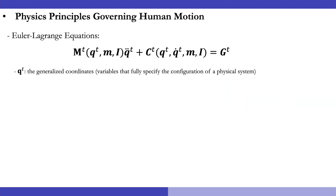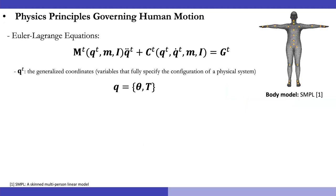We here first introduce those physics principles governing human motion. Human body is a complex physical system, and its dynamic behavior is often modeled through Euler-Lagrange equations. In this equation, q indicates the generalized coordinates. Given recent successful 3D human body model SMPL, q can be defined by the body pose parameters theta and a global translation parameter t.